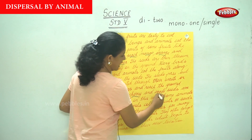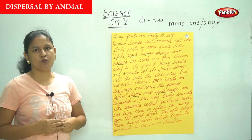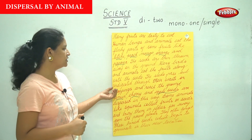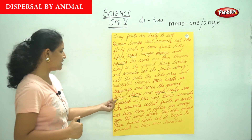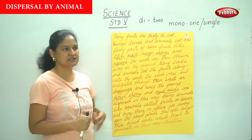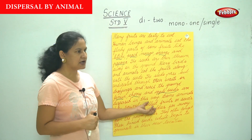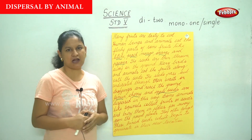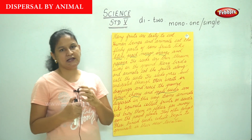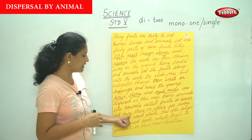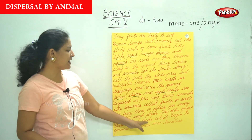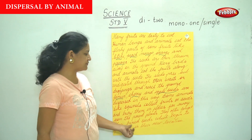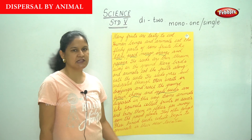Jamun, cherry and apple seeds are dispersed in this way — the fruit is eaten along with the seed, and the seed comes out undigested through their waste or droppings. Some animals like squirrels collect fruits or seeds and bury them in places far away from the parent plant. They often forget these buried seeds, which then begin to germinate in their new location.